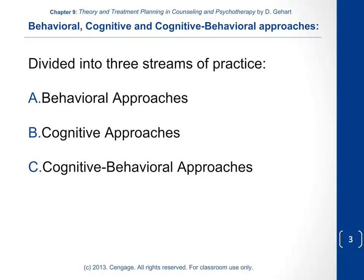There are three streams of practice: pure behavioral, pure cognitive, and a hybrid cognitive behavioral approach. Each of these streams has a different history, but in contemporary practice it's very hard to separate them. Most people in the 21st century draw from all of these, and the average cognitive behavioral practitioner is doing an integration of cognitive and behavioral, though there are many strands of practice and thought.